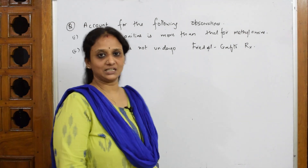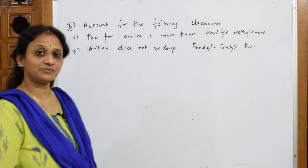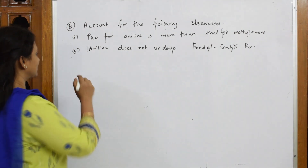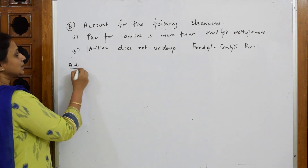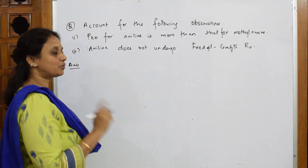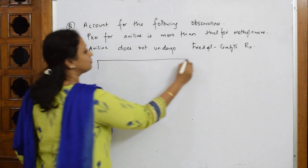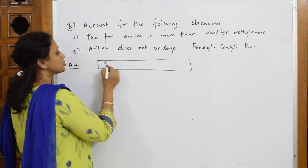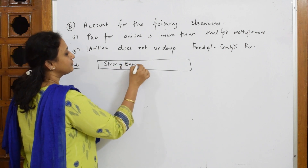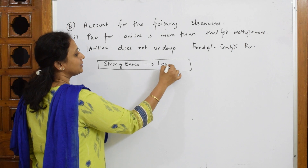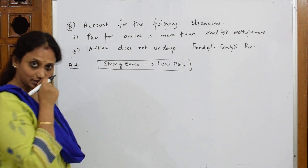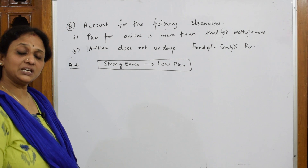They've asked us: pKb for aniline is more than that of methylamine. This question was already done, but if they ask for one mark, how should you write it? One important clue when pKb is given: strong bases will have low pKb. This should always be in your mind.